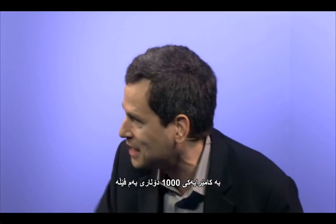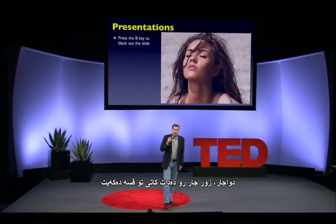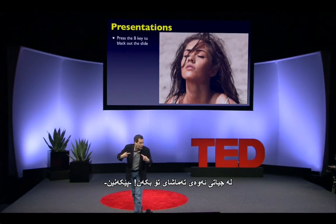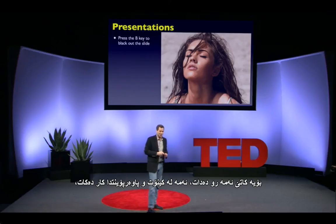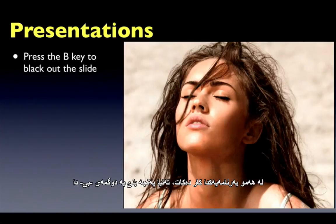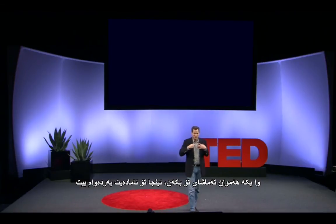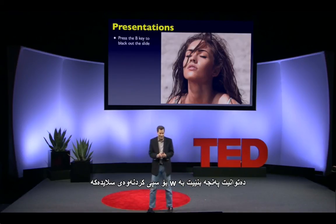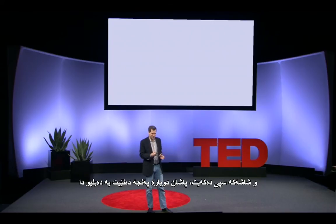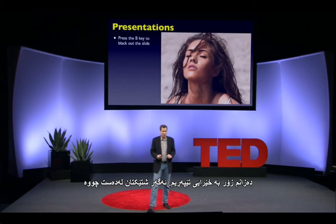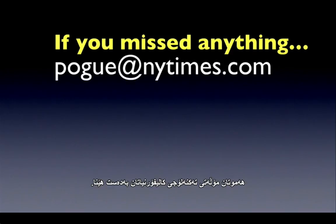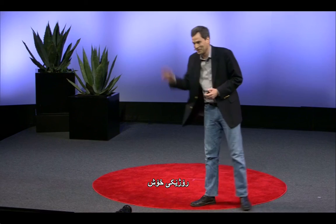And if you're really on a roll, you can hit the W key for whiteout — it whites out the slide, and then you can hit W again to unblank it. I know I went super fast. If you missed anything, I'll be happy to send you the list of these tips. In the meantime, congratulations — you all get your California technology license. Have a great day.